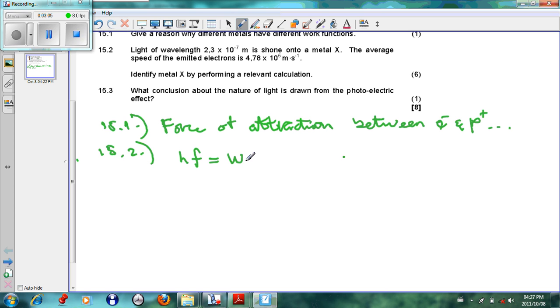hf equals w0 plus half mv squared. So h we know is Planck's constant, 6.63 times 10 to the minus 34. In this case, we see that we are not given the f, we're given the wavelength, so we'll have to make it hc over lambda equals w0 plus half mv squared. We're going to put this as c over lambda, and c is the speed of light, 3 times 10 to the 8, and your lambda is given as 2.3 times 10 to the minus 7.